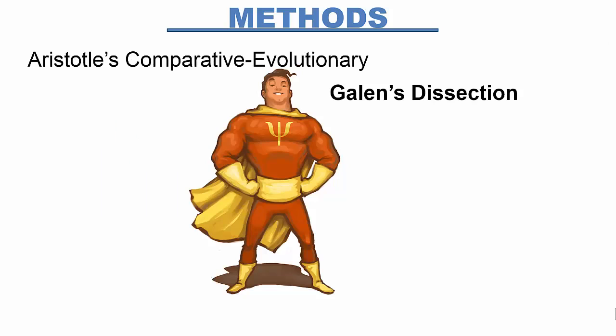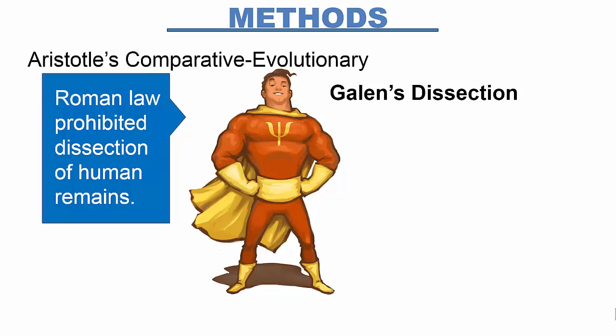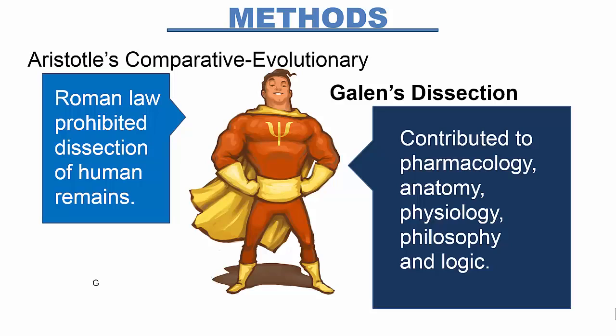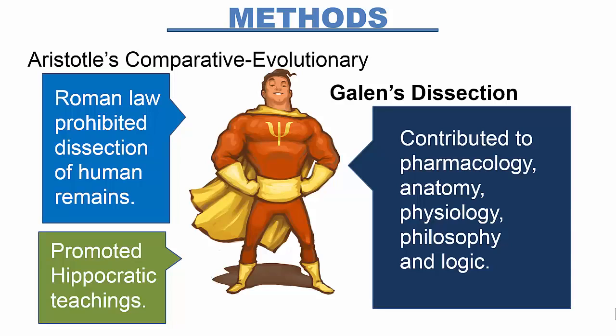About 500 years later, Galen agreed that Aristotle had the correct organ, but argued that his methodology had been wrong. Galen recommended dissection — the detailed analysis of a structure by cutting it into smaller, discrete segments.